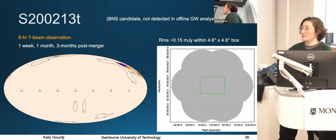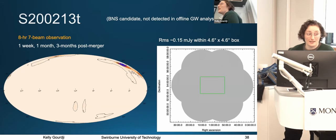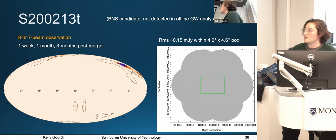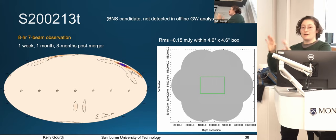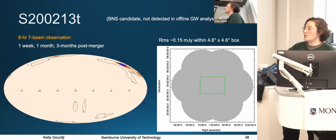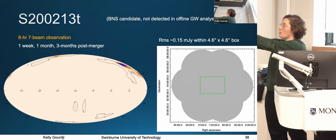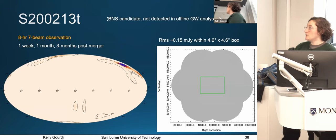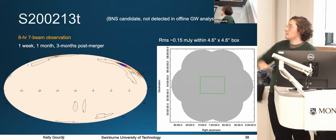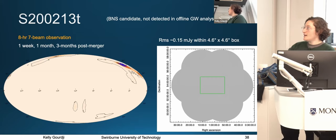We wanted to go even deeper and aim for sub-milliJansky levels. To do that, we simply doubled our integration times — observing for eight hours instead of four. This is really the standard observing setup and strategy we'll carry forward into O4. The resulting mosaic shows coverage out to about 60 square degrees, with the core 20 square degrees of uniform sensitivity. We've achieved sub-milliJansky levels, which bodes really well — we essentially just need an event to go off in the Northern hemisphere.